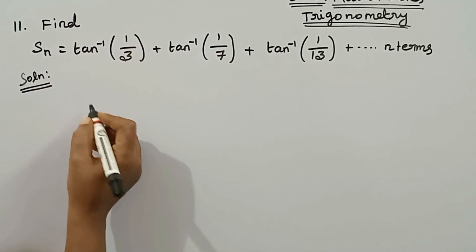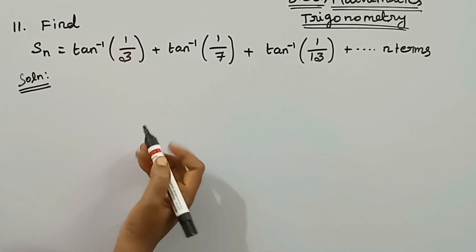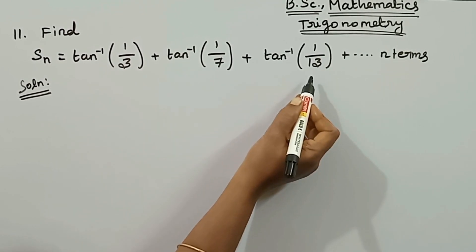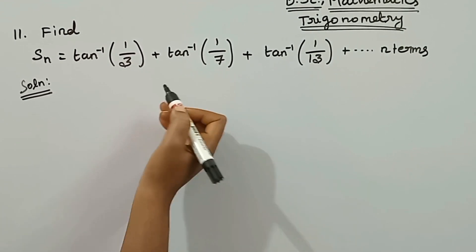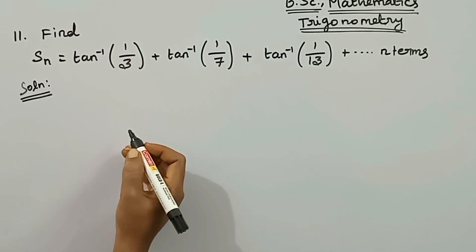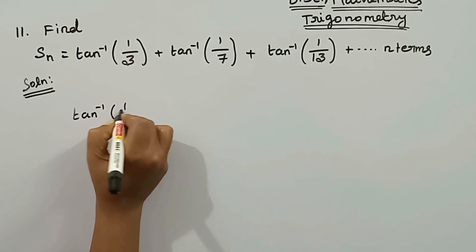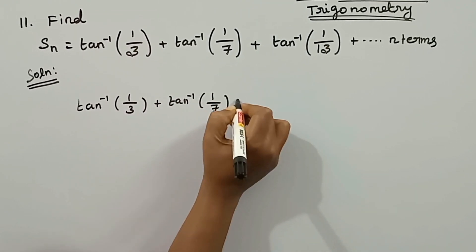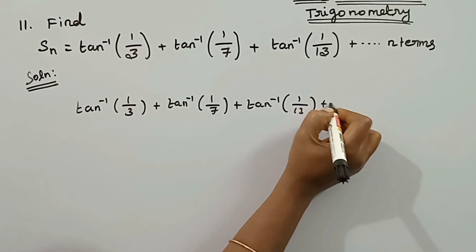We will use the method of differences. We will mark the general term in this series. The given series is tan inverse of 1 by 3 plus tan inverse of 1 by 7 plus tan inverse of 1 by 13 plus and so on. Now we will mark the terms.